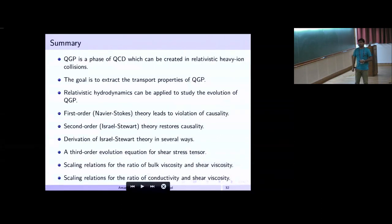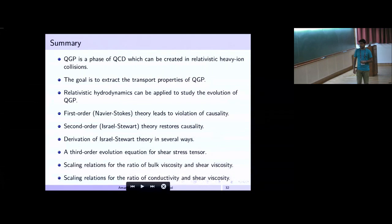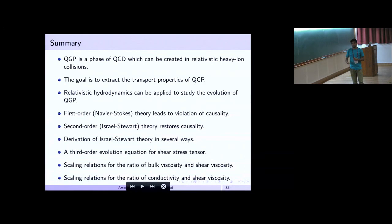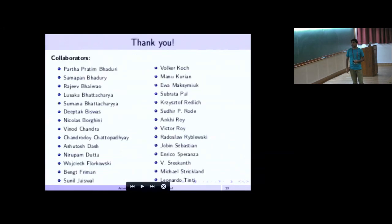To summarize: QGP is the phase of QCD and we apply hydrodynamics to study its evolution. First-order Navier-Stokes leads to violation of causality, which can be cured in second-order theory. Second-order hydro can be derived in several ways — from entropy considerations or from kinetic theory. I also showed a derivation of third-order hydrodynamic equations, and we saw interesting scaling results for ratios of dissipative quantities. Thank you, and thanks to my collaborators for the nice collaboration.